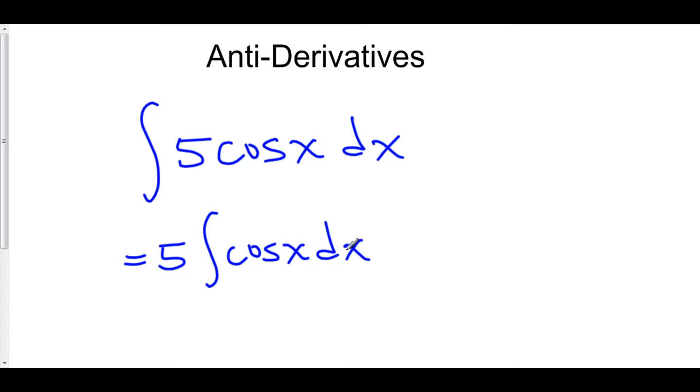So the family of antiderivatives of cosine x are sine x plus c. So the answer here is 5 times sine x plus c. And this is the answer right here. 5 times sine x plus c.